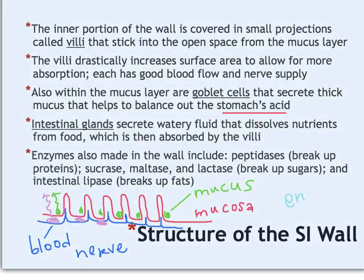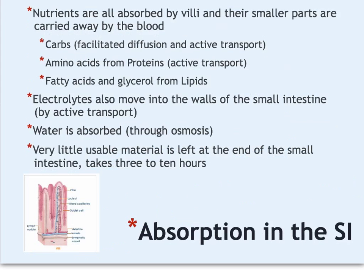Just like in the stomach and the mouth, there are enzymes present here with specific jobs important for the breakdown of large molecules. We have enzymes for all major food components. We have peptidases, which break up proteins. We also have carbohydrate-based enzymes — anything ending in '-ase' is an enzyme, and the root of the word tells you what it works on. So sucrase breaks up sucrose (table sugar), maltase breaks up maltose, and lactase breaks up lactose, the sugar found in milk and dairy products. Finally, intestinal lipase is there to break up fats.